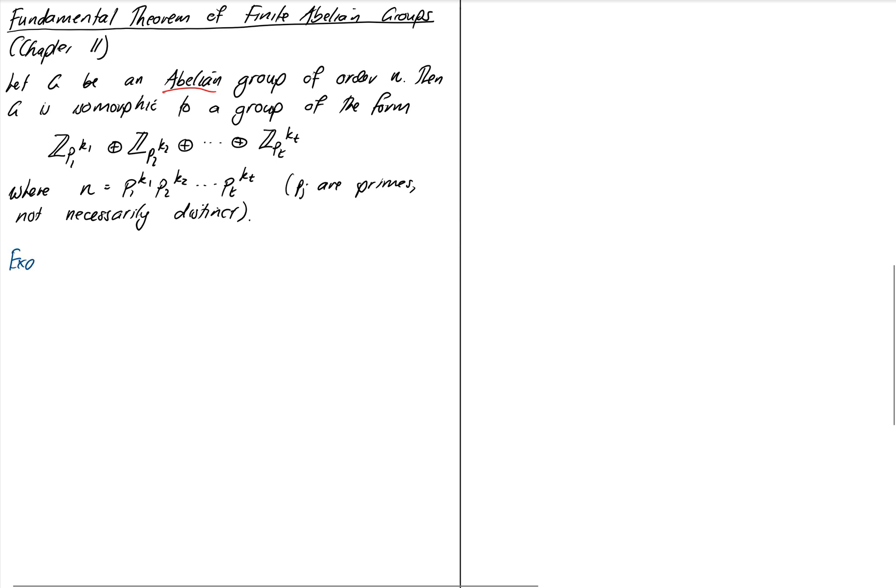We're going to find the possible structures that an abelian group of order 1176 could have. Find the isomorphism classes, the possible groups isomorphic to an abelian group of order 1176. First step is to find what the prime factors are, and that turns out to be equal to 2 cubed times 3 times 7 squared.